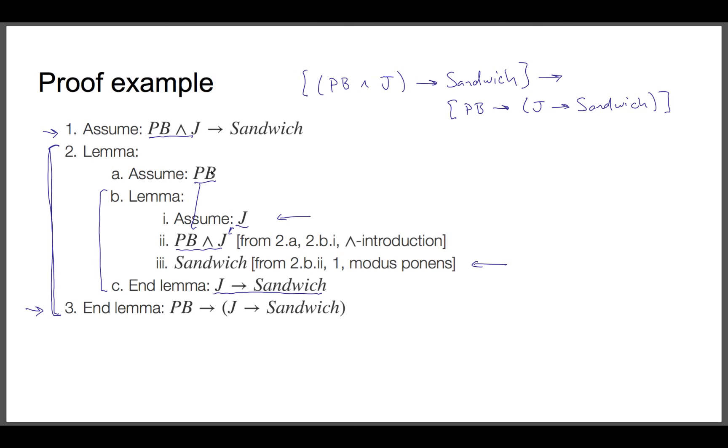In this lemma, we assumed peanut butter. Then we proved this lemma that shows that jelly implies sandwich. So now I can close this lemma. My assumptions are just peanut butter, and the conclusion is that jelly implies a sandwich. And now I'm done with my proof.